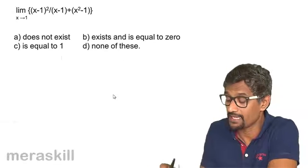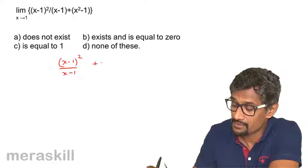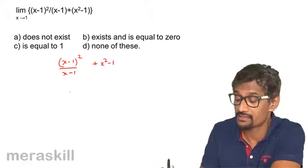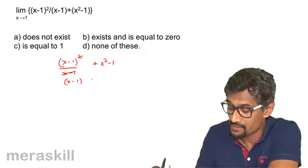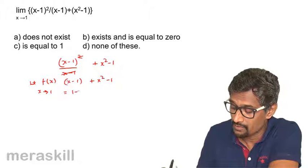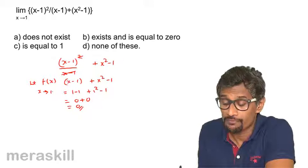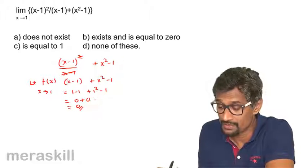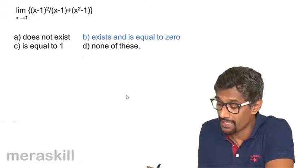Finally, consider the limit of (x minus 1) squared divided by (x minus 1), plus (x² minus 1), as x approaches 1. Simplifying (x minus 1)²/(x minus 1) gives (x minus 1), so the expression becomes (x minus 1) plus (x² minus 1). Substituting x equals 1 gives (1 minus 1) plus (1 minus 1), which is 0 plus 0 equals 0. This is determinate, so the limit exists and equals 0.